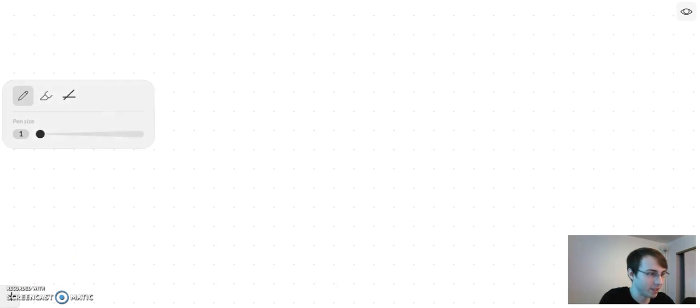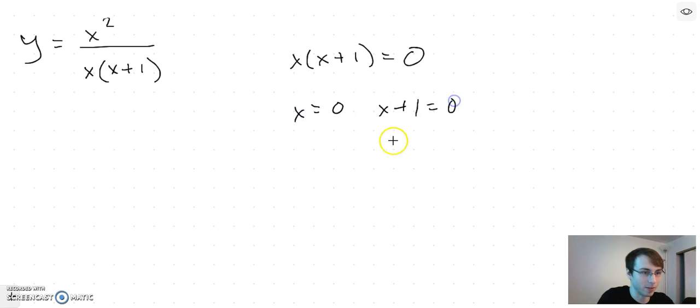Let's just take a function y equals x squared over x times x plus 1. To find the vertical asymptotes you might think, oh we just set this equal to zero: x times x plus 1 equals 0. So x equals 0 or x plus 1 equals 0, so x equals 0 or x equals negative 1.